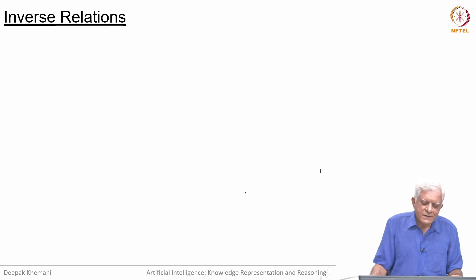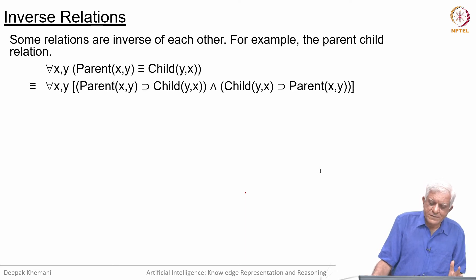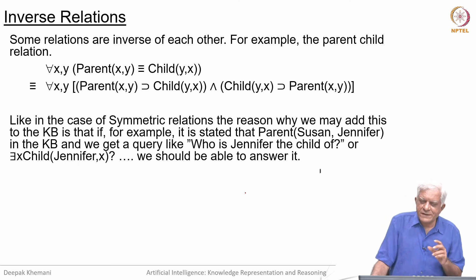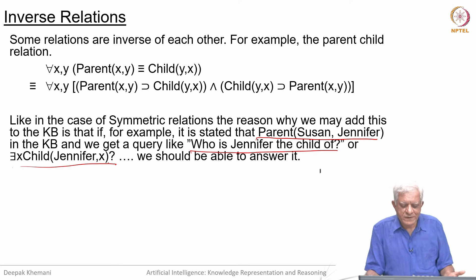There can be inverse relations as well. Just like there are symmetric relations, there are inverse relations. For example, the parent-child relationship is an inverse relationship. We can say that for all x, y: Parent(x,y) is equivalent to Child(y,x). We can break this into two implications: Parent(x,y) implies Child(y,x), and Child(y,x) implies Parent(x,y). The reason we may add this information is because the facts may state it in one form—for example, Susan is the parent of Jennifer—but the query could be: who is Jennifer the child of? So we should be able to use these two predicates to arrive at the right answer.